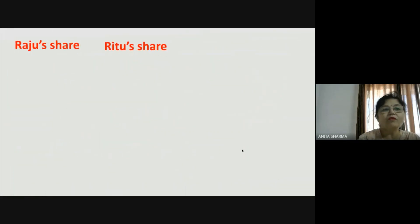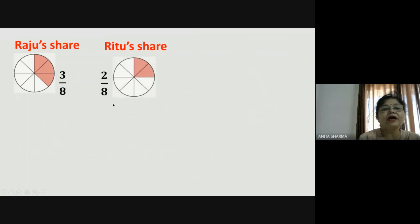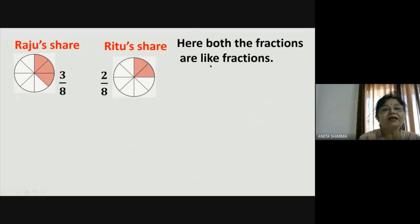Now first let us see how much is Raju's share. Raju's share is three eighths — out of eight he ate three pieces. And Ritu's share is two eighths. Now if we are just looking at the picture we can easily tell who ate more. But suppose the picture is not in front of us, then how do we make a rule to compare these fractions? Here both the fractions are like fractions — the denominators are equal.